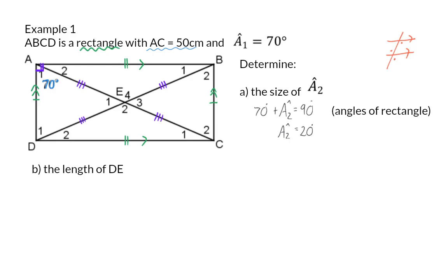Question B. Determine the length of DE. We already know that the lengths of the diagonals are equal. So, line AC, which is 50 centimetres, will be the same size as DB, which will then also be 50 centimetres. We also know that the diagonals bisect each other.